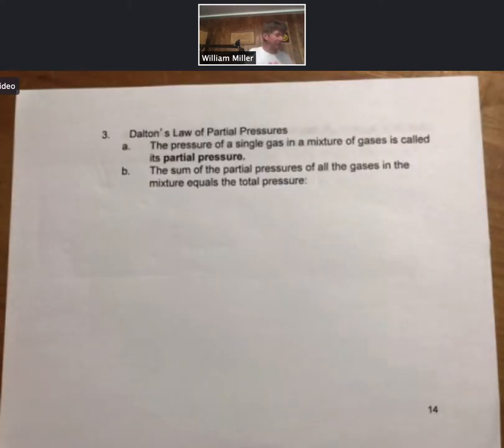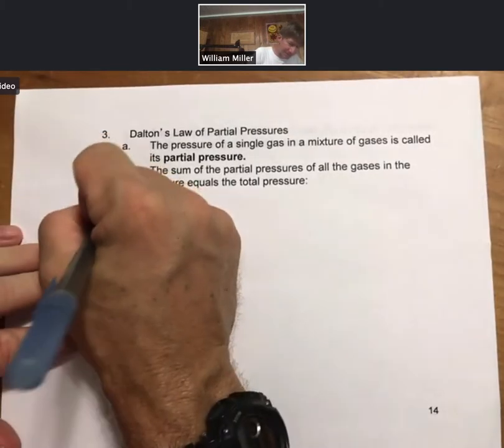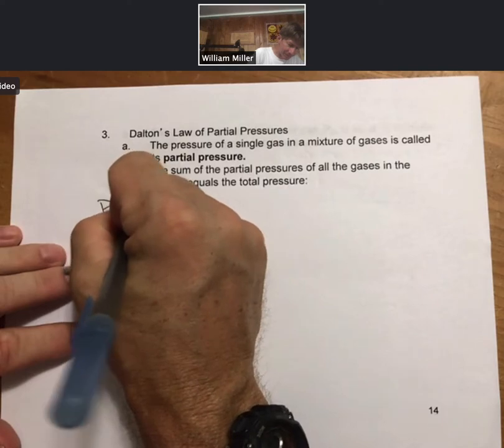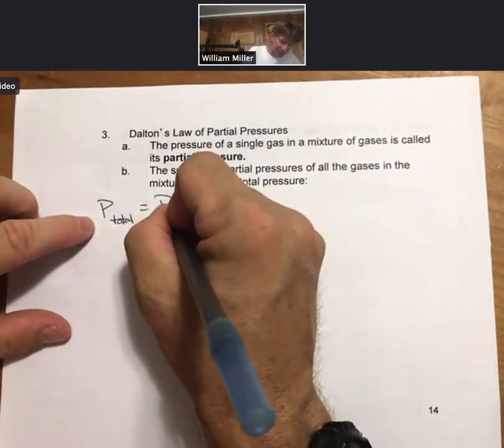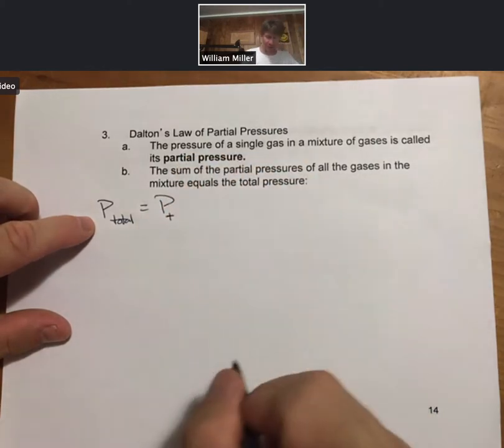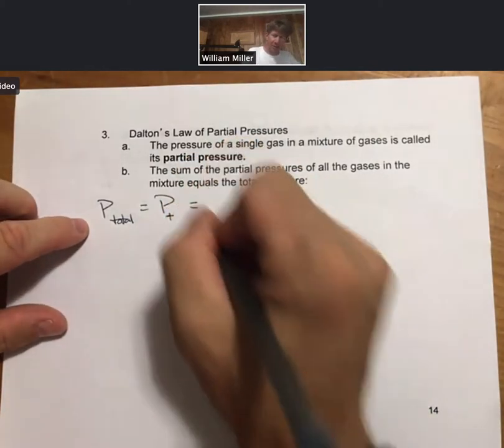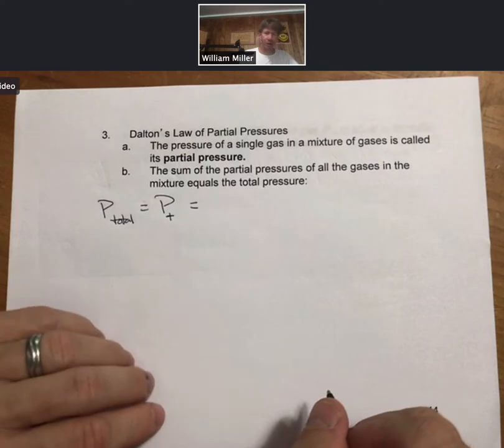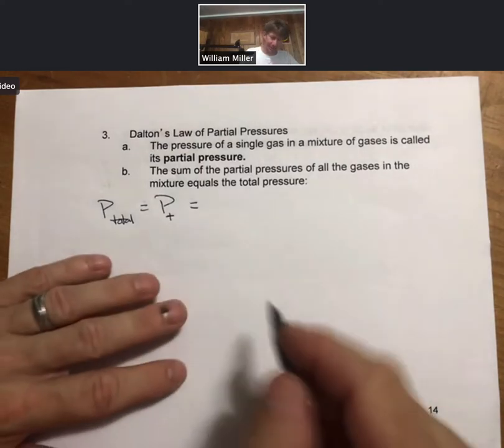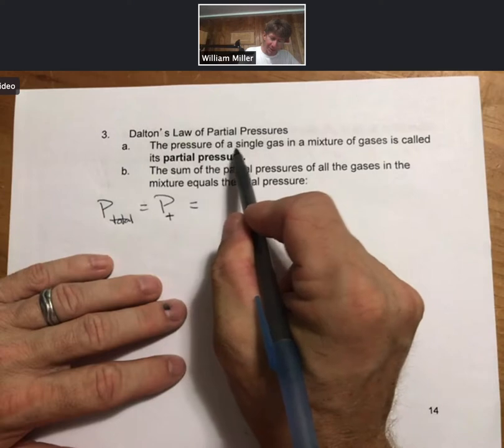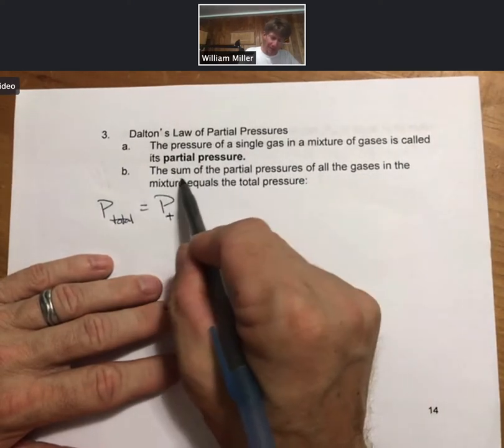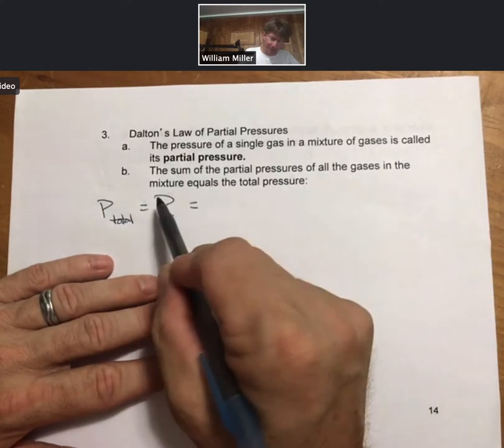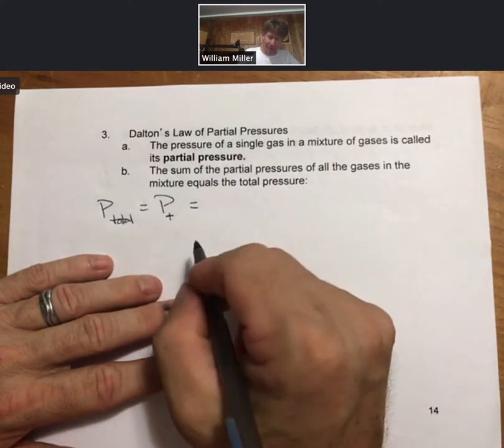For Dalton's Law of Partial Pressures, let me state it. The total pressure, oftentimes P total, is going to be equal to the partial pressure of all of the gases. The pressure of a single gas in a mixture of gases is called its partial pressure. The sum of the partial pressures of all gases in the mixture equals the total pressure.